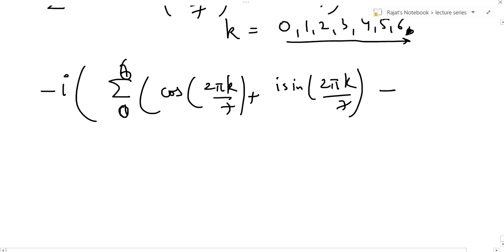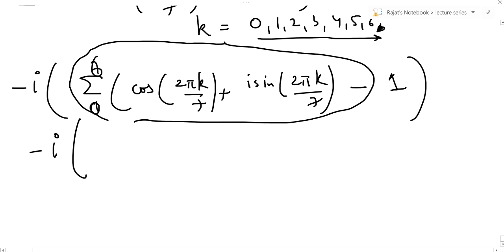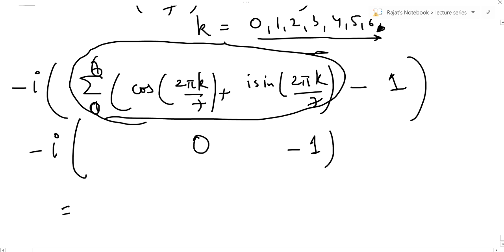This will be minus i times the sum of the seventh roots of unity minus one. The sum of the seventh roots of unity is equal to zero. I have covered this in a different lecture on how to find the sum of roots of a polynomial. So this is 0 minus 1, and minus i into minus 1 is i. So the final answer is i.